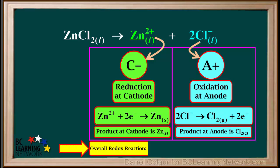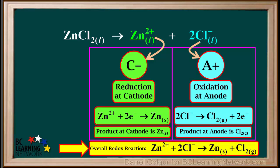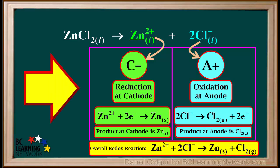We get the equation for the overall redox reaction by adding up the two half-reactions. It is Zn2+ plus 2Cl- gives Zn solid plus Cl2 gas. Going through this process should greatly help you with any questions you get involving the electrolysis of molten salts, or what we call type 1 electrolytic cells.